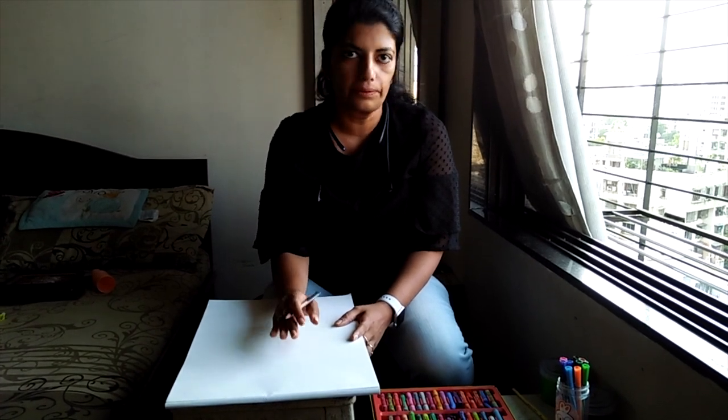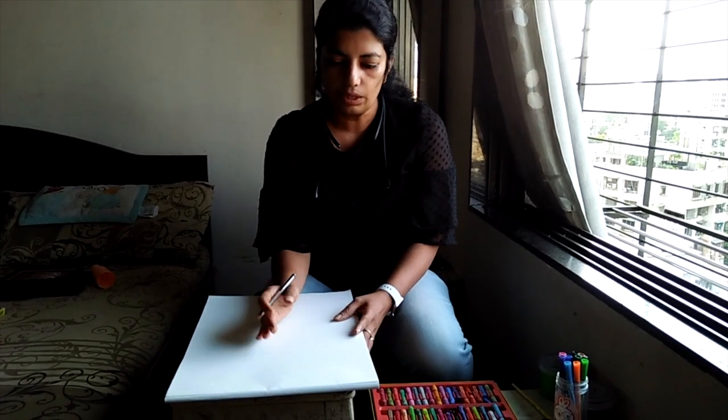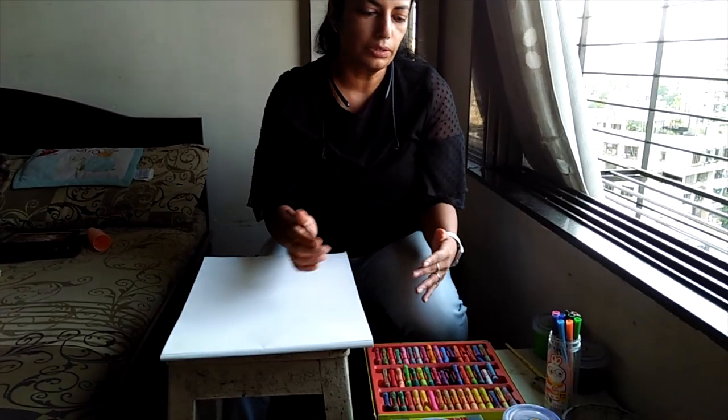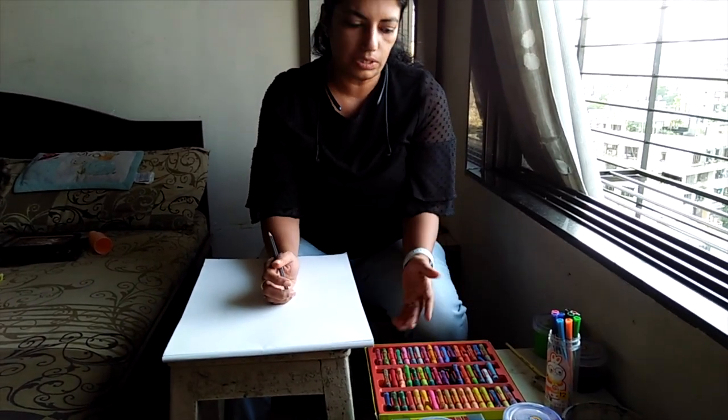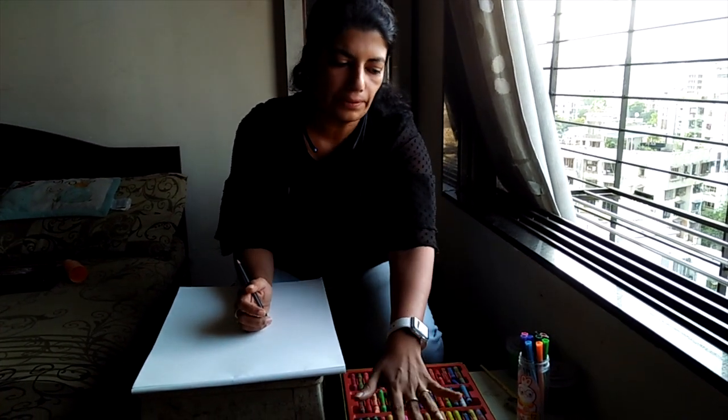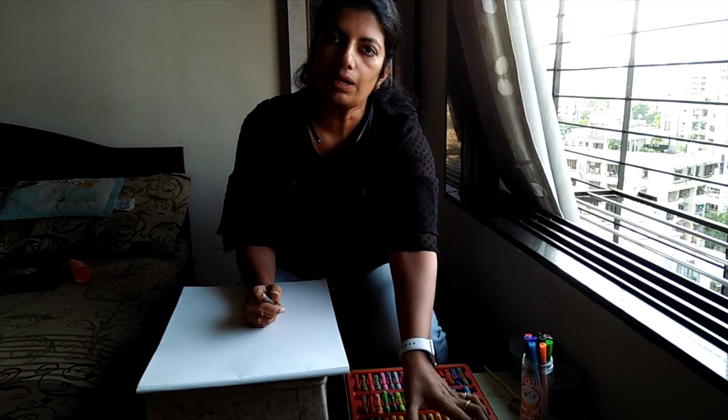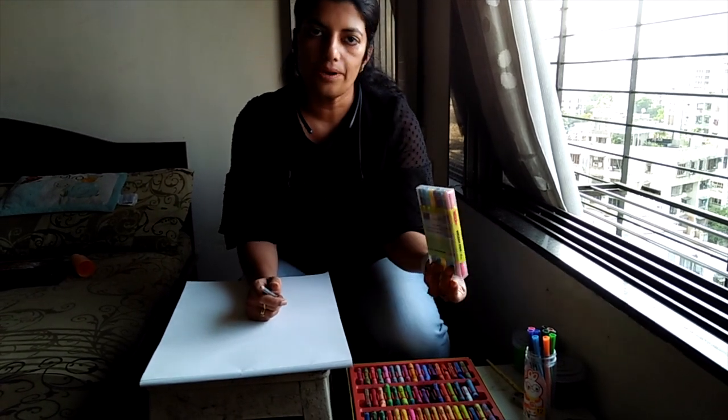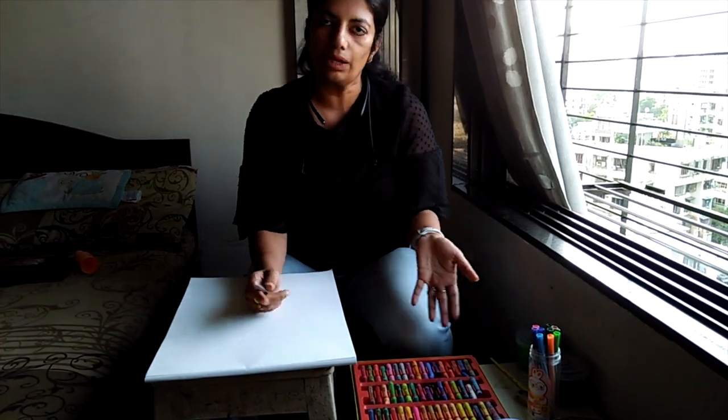So today we are going to do a flower pot. Now I'm going to draw a very basic flower pot. Here I don't need anything from outside. I have a crayon box, I have a few sketch pens, I have a few paints, and I have brush pens. So I'm going to work with the material what I have at home.